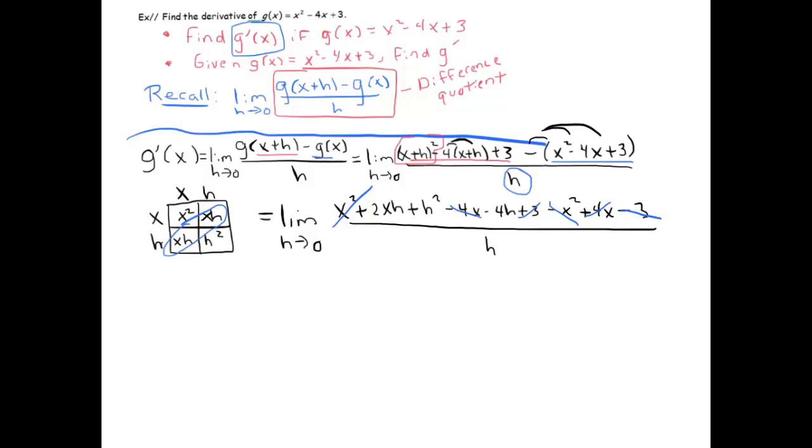What you'll see that's left, and this is no accident, is that you have 2xh + h² - 4h. All of those have h's in them, which means that h can be factored out and will cancel with that denominator. That will always happen in problems like this one.